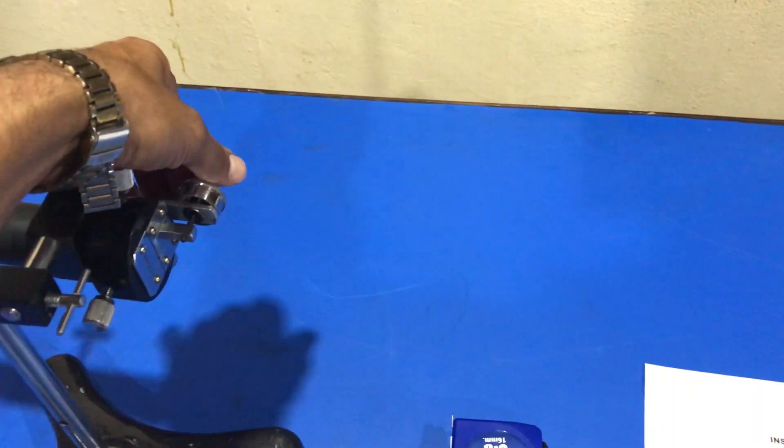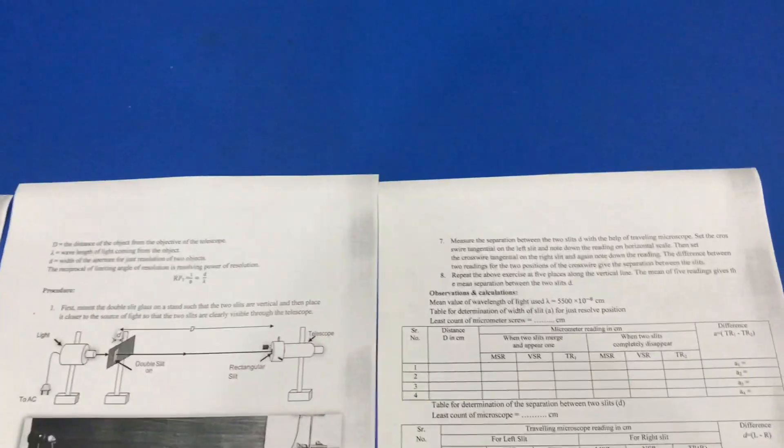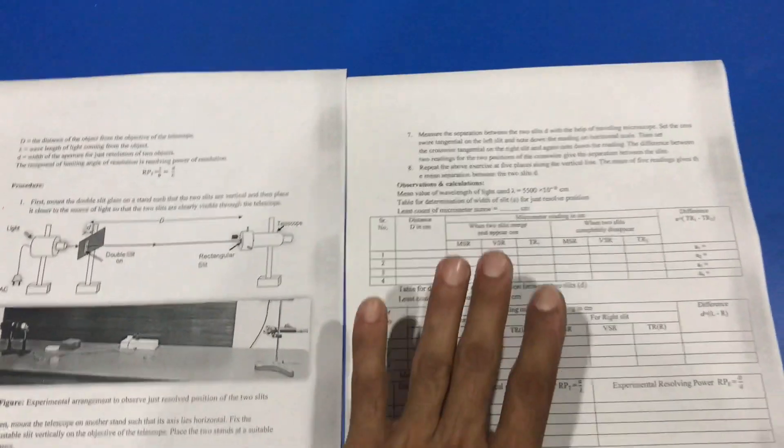From the telescope, we observe two slits. We close the micrometer slit till the two slits merge and appear as one.